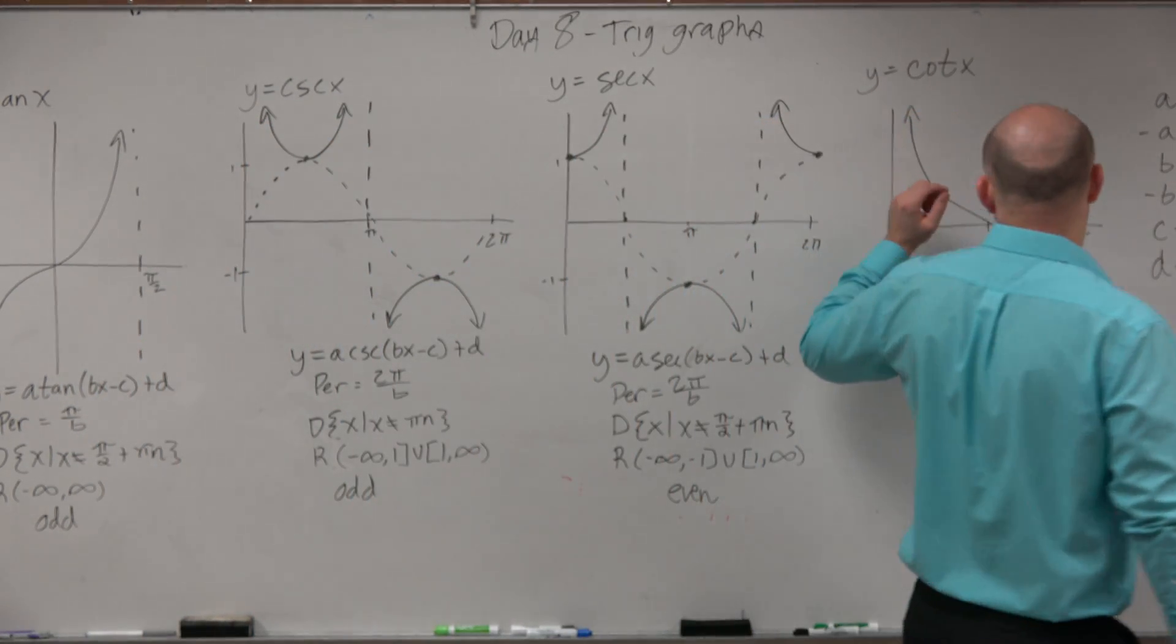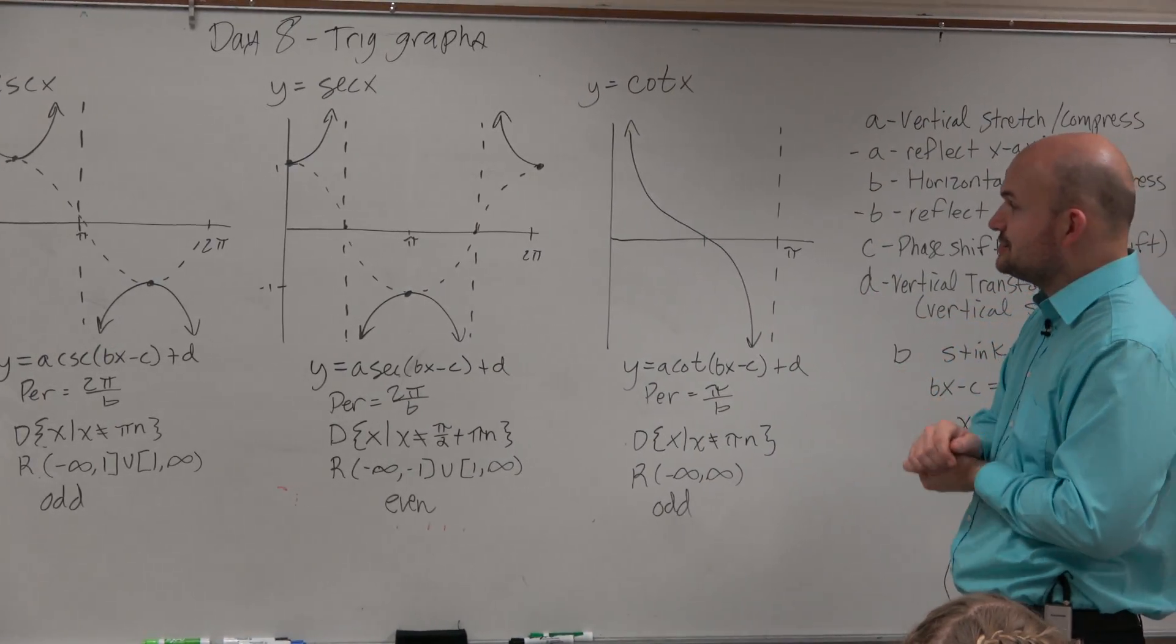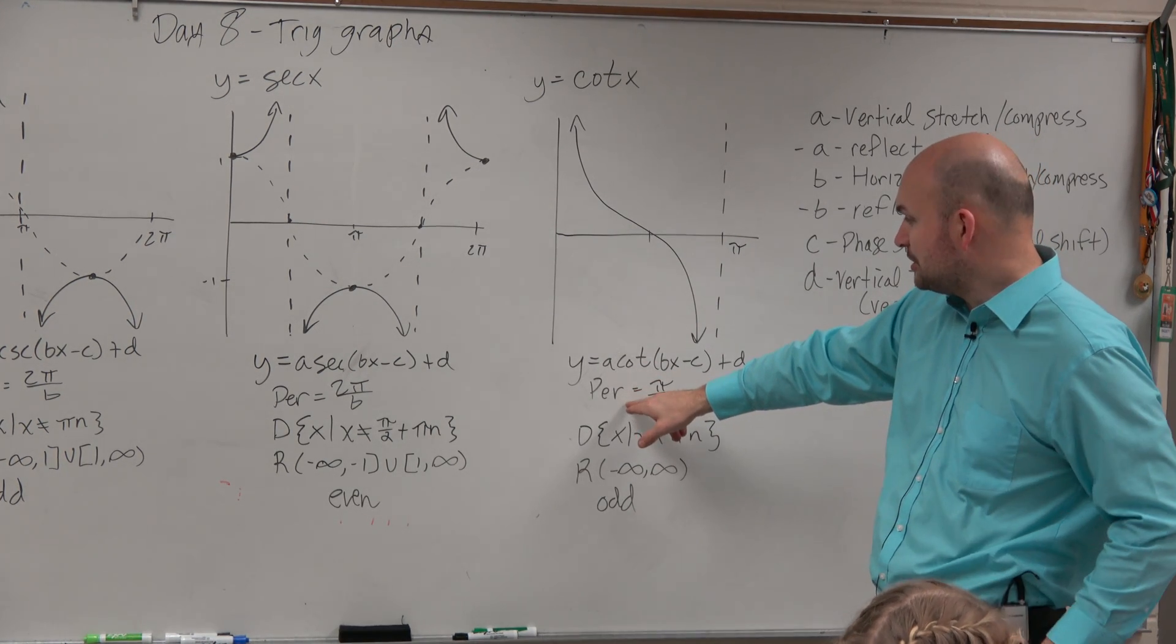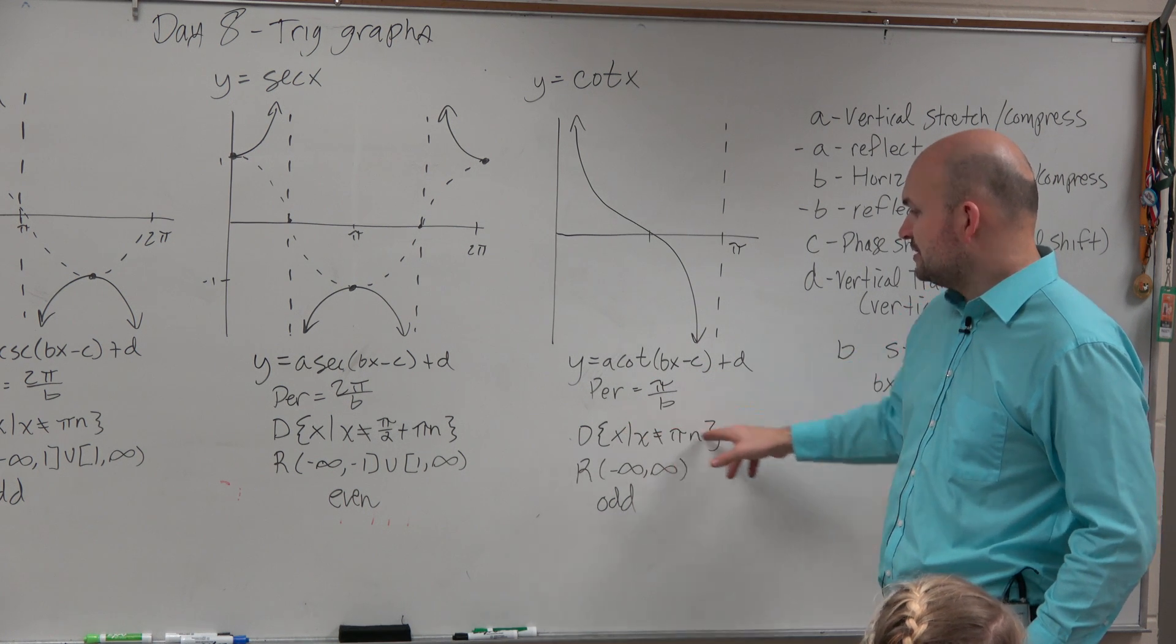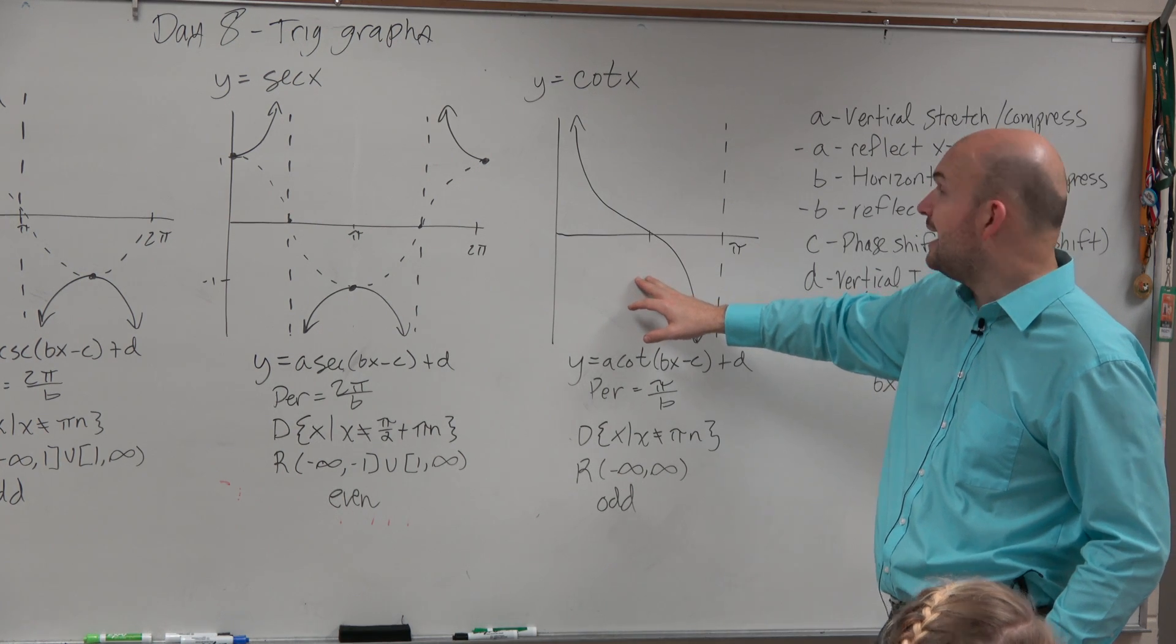And then last but not least we have the cotangent function, which is the reciprocal of tangent. And this one, just like tangent, has a period of pi. And therefore, if you have a b, you divide it by b. So the domain is going to be a little bit different. It is unbounded. And cotangent, just like tangent, is also odd.